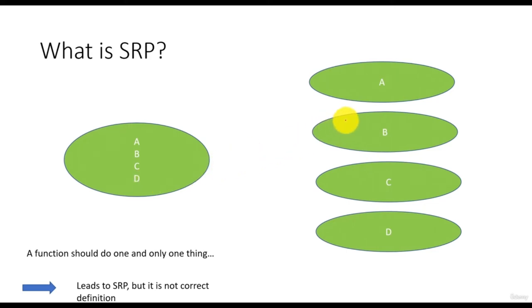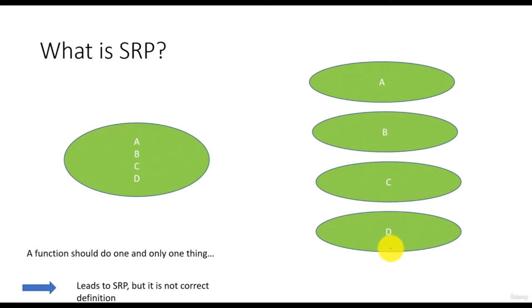As shown in this diagram, the left function is doing four tasks — A, B, C, and D. In that case, it needs to be broken down into four functions, each focusing only on one task. This splitting of a function into multiple focused functions definitely leads to SRP, and we have understood SRP in this way so far. This understanding is good, and if we adopt it, we will achieve compliance to the SRP. However, this is not the exact definition of SRP.